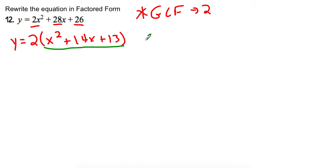The a value is equal to 1, so that's nice. That means that I'm looking for two numbers where the product is 13 and the sum is 14.